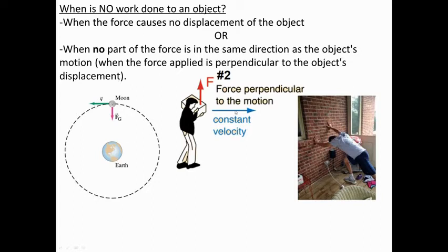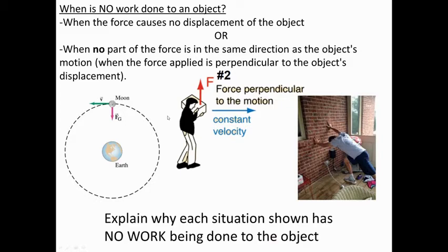Here are three situations where no work is being done. The moon goes around the Earth at a pretty constant speed and stays at a pretty constant height. Even though it has gravitational energy due to its height, that energy isn't changing, so there's no change and no work done with gravitational energy. It does have sideways kinetic energy, but it goes at a fairly constant speed, so there's no change in kinetic energy — meaning there's no work being done if the energy doesn't change.